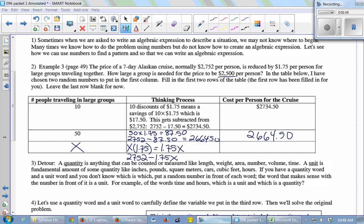And I want to know when will the cost per person be 2,500. So I want 2,500 there. And I have to know what X will make that equal to 2,500.